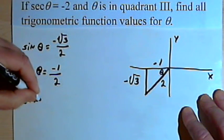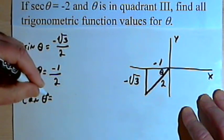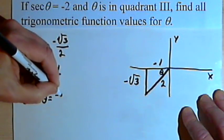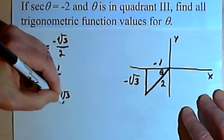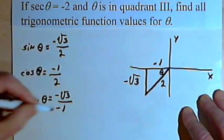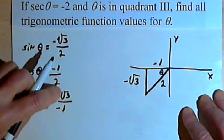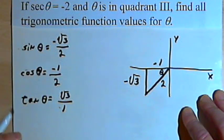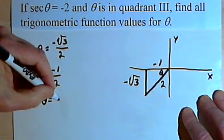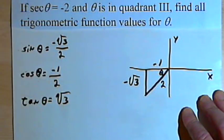And the tangent of theta is going to equal the opposite side, negative square root of 3, over the adjacent side, which is negative 1. And I can simplify this fraction. I can get rid of the negative signs, they're going to cancel out. I won't need the one in the denominator anymore, so I'm just going to have the square root of 3.